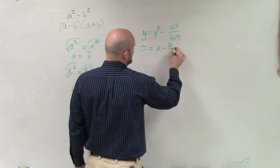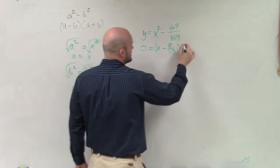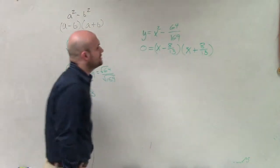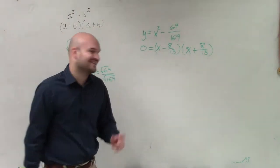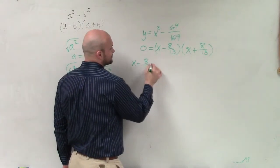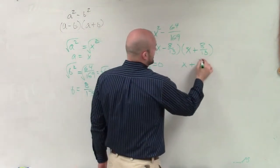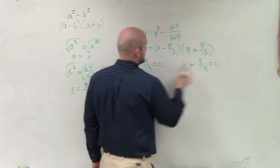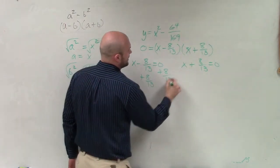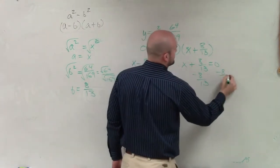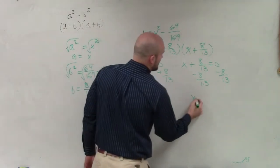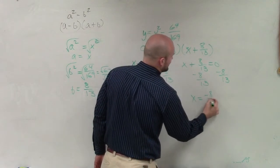And now I have x minus 8 over 13 times x plus 8 over 13. So now I need to apply the zero product property to solve. I set these both equal to 0: x minus 8 over 13 equals 0, and x plus 8 over 13 equals 0. I add 8 over 13 to both sides for the first, and subtract 8 over 13 from both sides for the second. Therefore, my final solutions are x equals 8 over 13, and x equals negative 8 over 13.